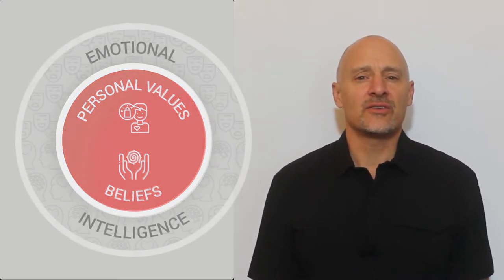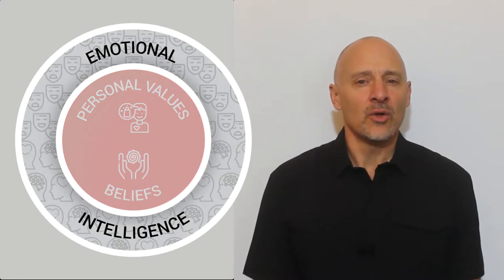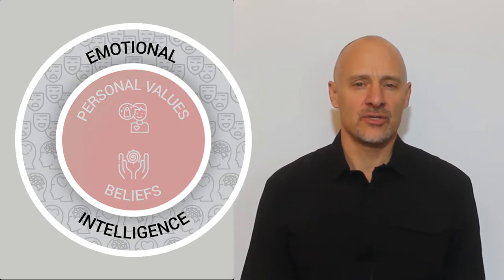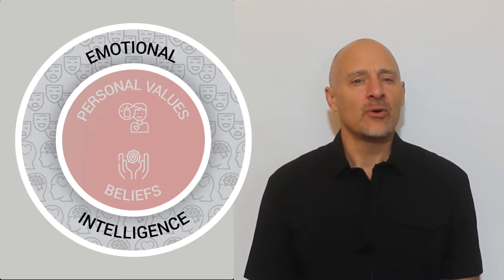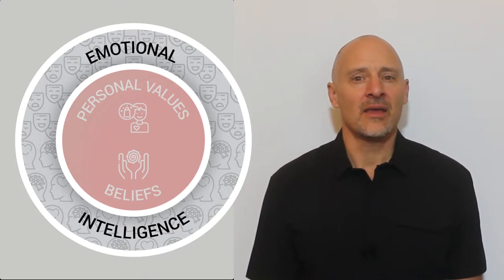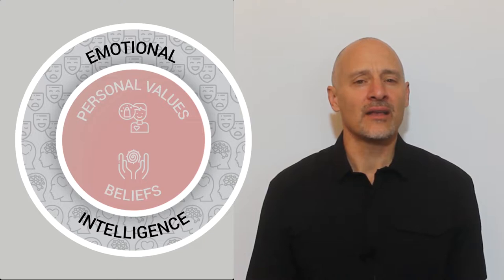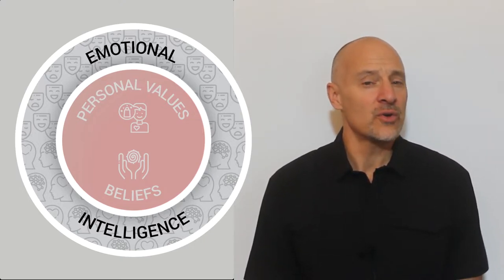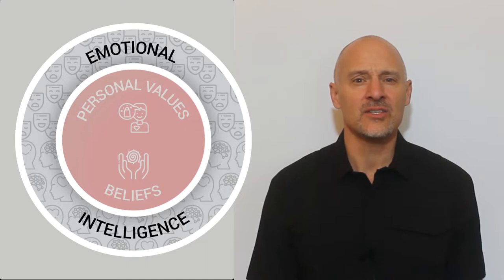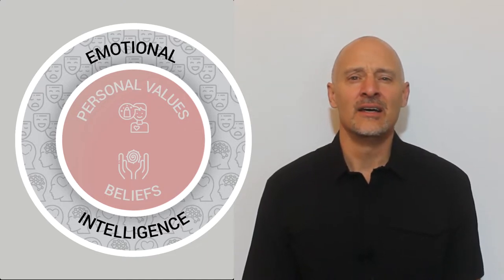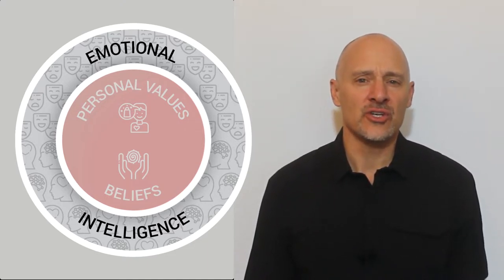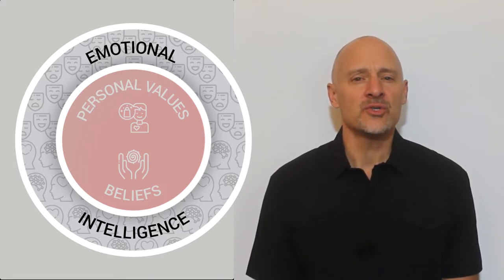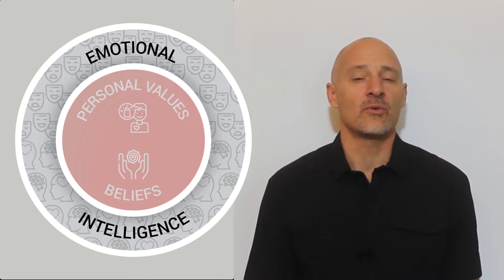Building off of values and beliefs, the middle or second section refers to emotional intelligence. Emotional intelligence, or EI, can be defined as the way in which we recognize, understand, and manage our emotions or those of others. It's the way in which we express our thoughts, develop and maintain social relationships, cope with challenges, and use emotional information in an effective and meaningful way.